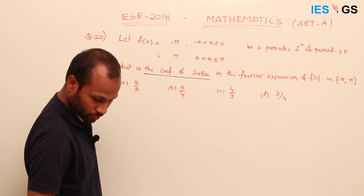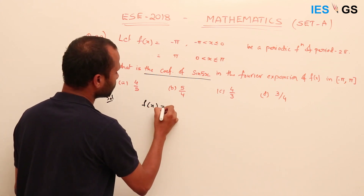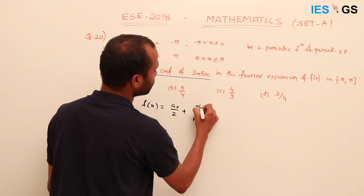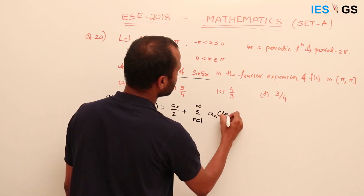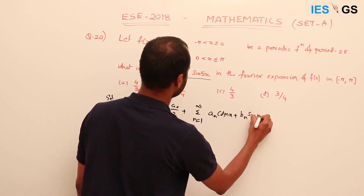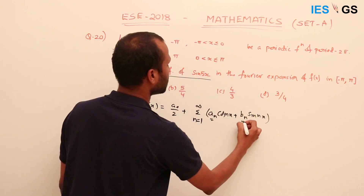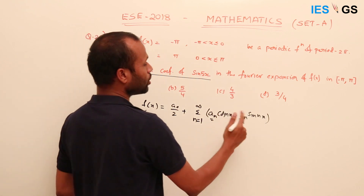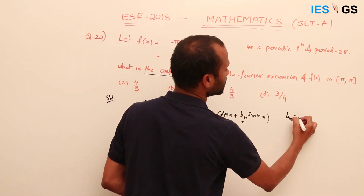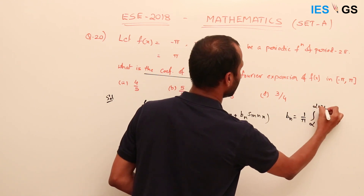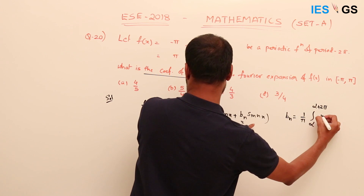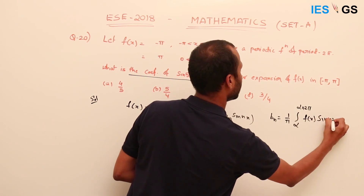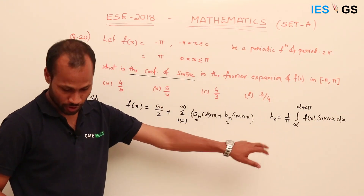The coefficient of sin(nx) is bₙ, defined as: bₙ = (1/π) ∫[α to α+2π] f(x) sin(nx) dx. Since he asks for the coefficient of sin(5x), we need b₅ over the interval [−π, π].